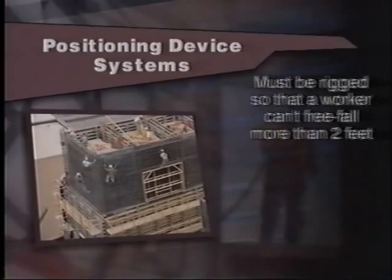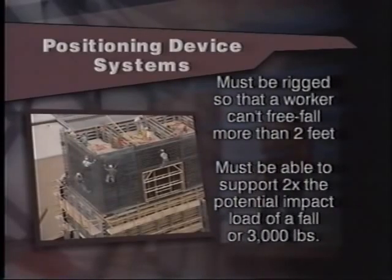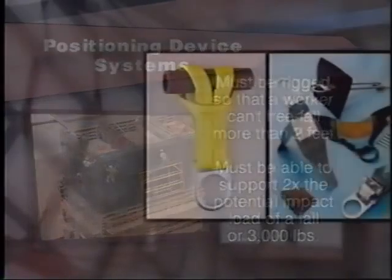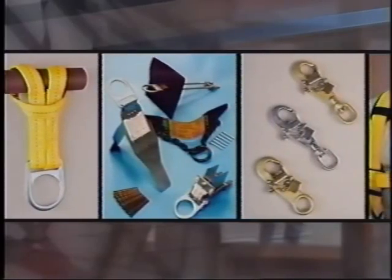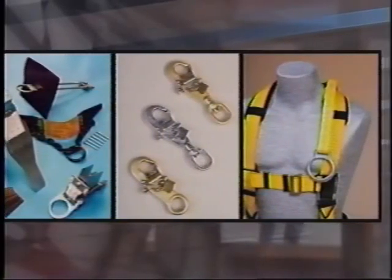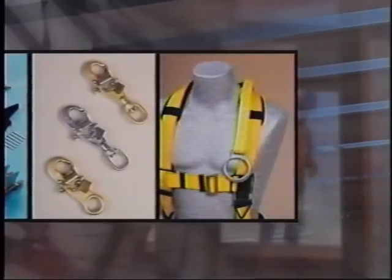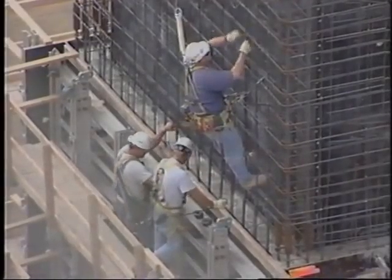This system must be rigged so a worker can't free fall more than two feet, and it must be able to support two times the potential impact load of a worker's fall, or 3,000 pounds, whichever is greater. To ensure the safety of the system, always be sure to use connectors, connecting assemblies, snap hooks, and D-rings that are made of approved materials and meet designated strength ratings. Inspect the system before each use for wear, damage, or deterioration, and remove defective parts from use.